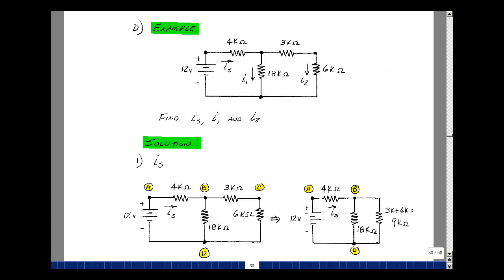This lesson deals with an example that uses series and parallel equivalent resistances to solve for unknown currents. You can find this example in the ECE 201 e-book in Chapter 2, starting on page 30.